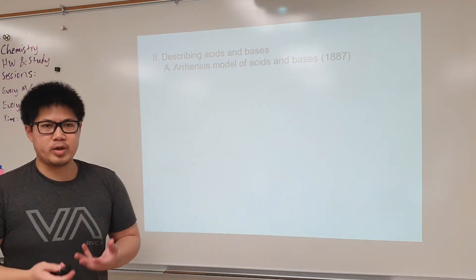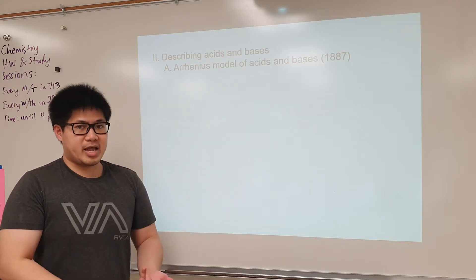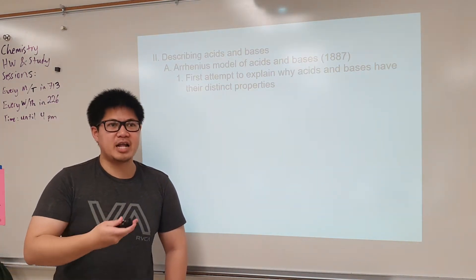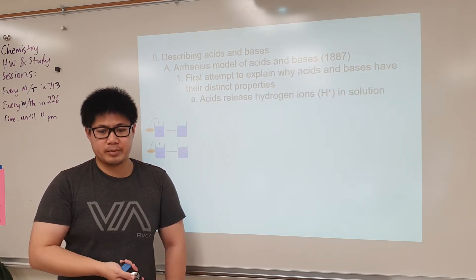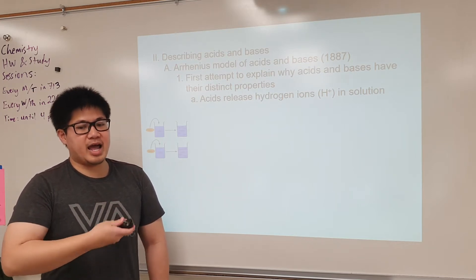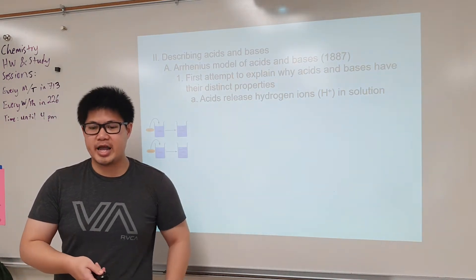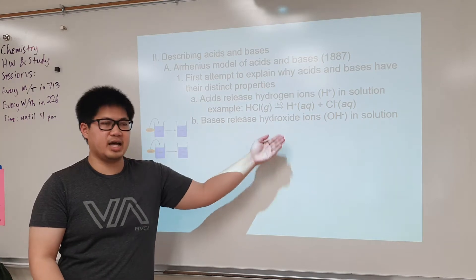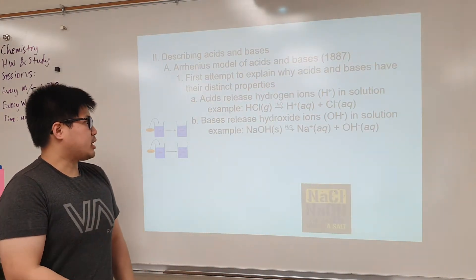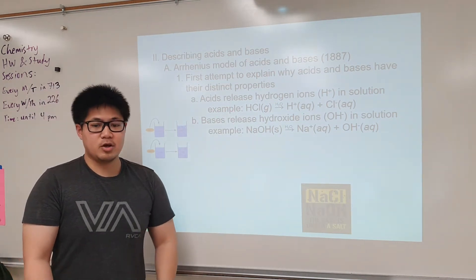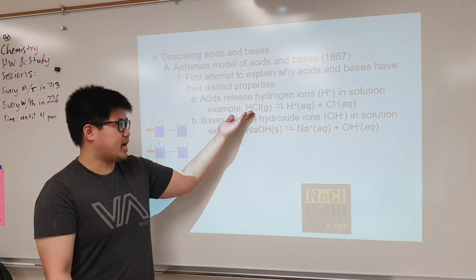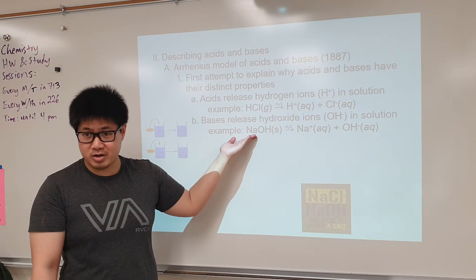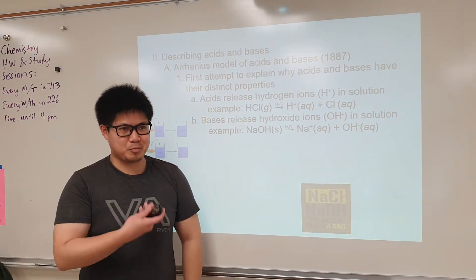When describing acids and bases, we have to come up with a chemical model. The first proposed model is called the Arrhenius model. The Arrhenius acid definition is defined as acids being able to release their hydrogen ions, H+, in solution. Arrhenius bases release their hydroxide ions in solution. Looking at examples for acids and bases, they did exactly that.